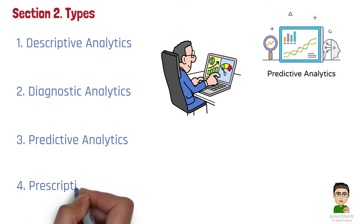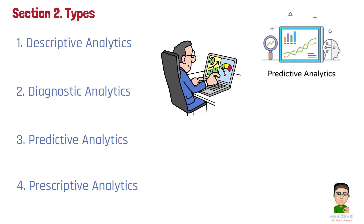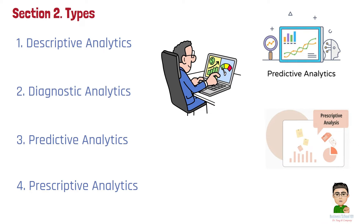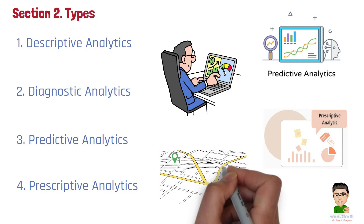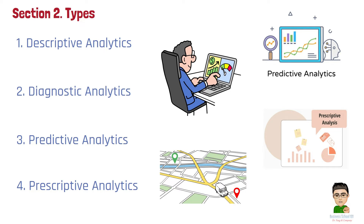Type 4: Prescriptive analytics. Prescriptive analytics goes one step further by recommending actions based on the data. It answers the question 'what should we do?' For example, a logistics company might use prescriptive analytics to optimize delivery routes, reducing costs and improving delivery times based on traffic patterns and fuel prices.